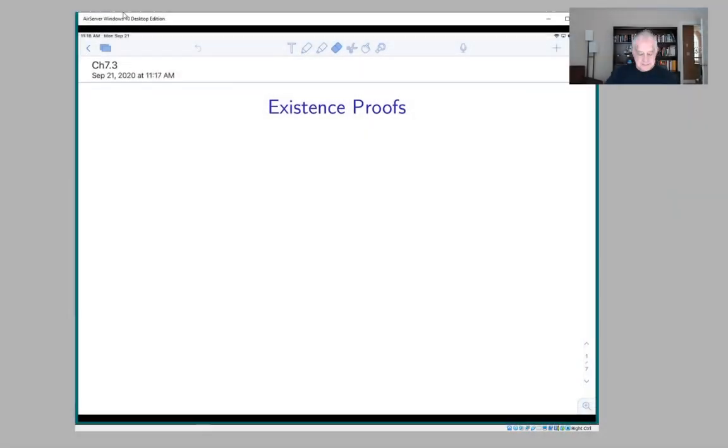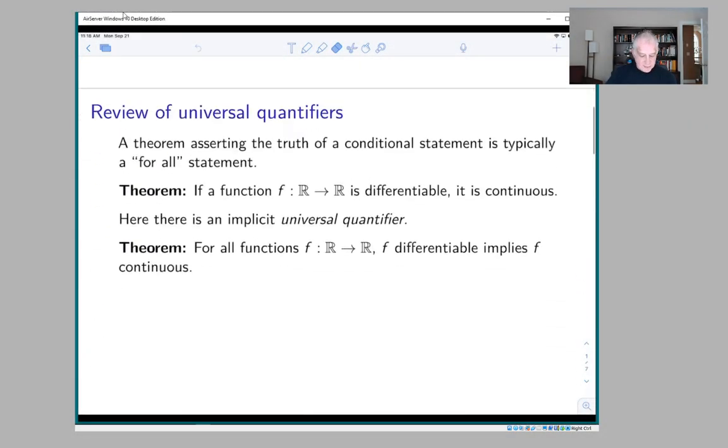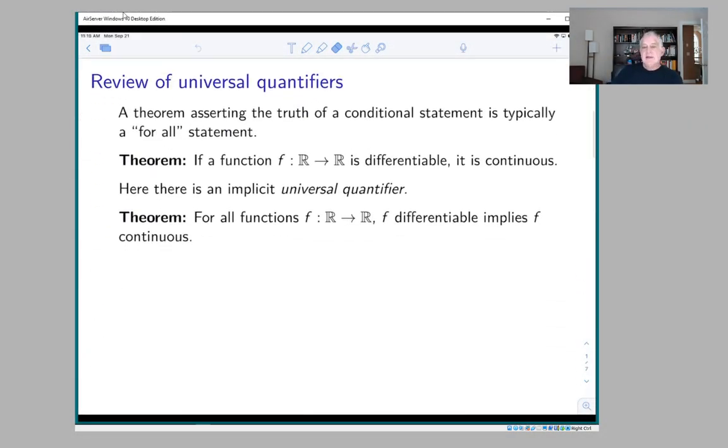First of all, most implications that we look at have implicit universal quantifiers. An example here is this theorem: if a function f from the real numbers to the real numbers is differentiable, it is continuous. Here there's an implicit universal quantifier.